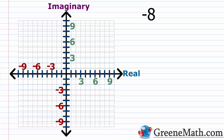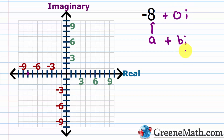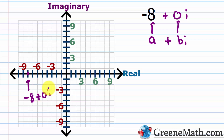What if they throw a curveball? Let's say you're asked to plot negative 8 on the complex plane. Negative 8 is a real number, so you go to negative 8 on the real axis. You can still use the a plus bi format: a is negative 8 and b is 0, giving negative 8 plus 0i. Going 8 units left on the real axis and 0 units on the imaginary axis lands you at negative 8 on the real axis.